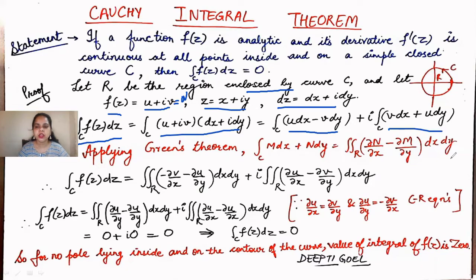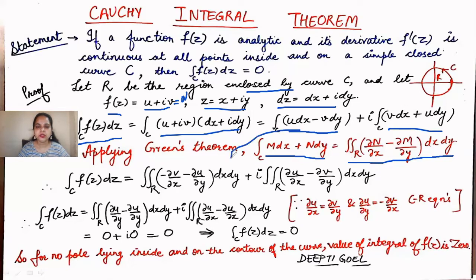We apply Green's theorem, which relates the line integral to the surface integral by the formula: line integral over C of M·dx + N·dy equals surface integral over R of (∂N/∂x − ∂M/∂y)·dx·dy. Using Green's theorem, we replace the first integral, converting it from a line integral to a surface or double integral over dx·dy, obtaining the term (∂v/∂x − ∂u/∂y)·dx·dy — noting the sign arrangement from the substitution.